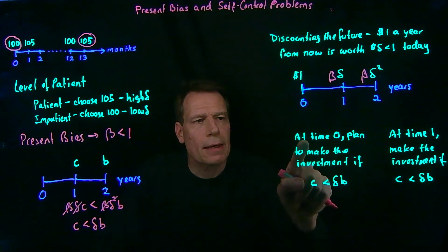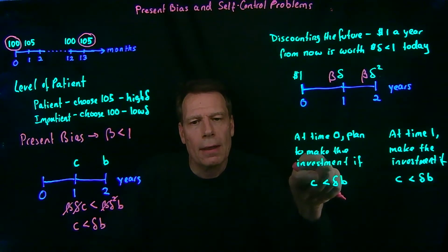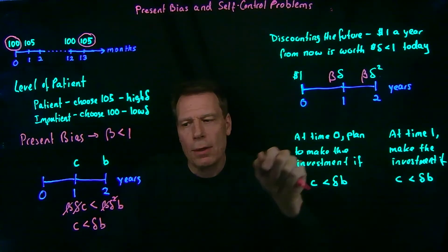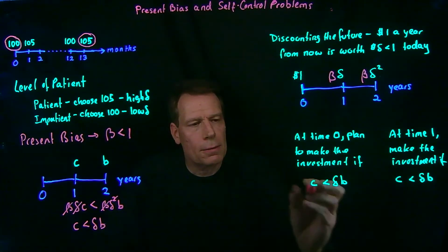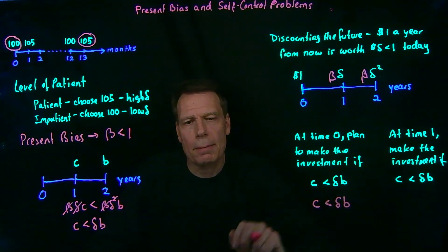We simply cancel the beta and then cancel the delta and the exponent. So when we ask, at time zero in the present, will you plan to make the investment? The answer is you will, with this present bias, so long as c is less than delta b, exactly the same rule we had under the standard economic model.